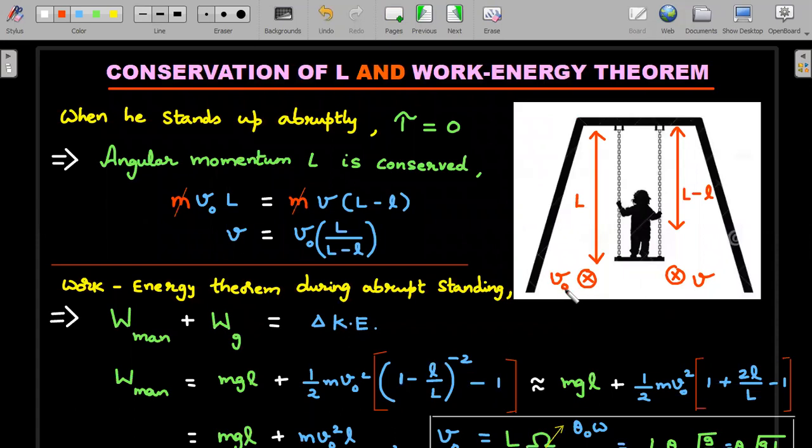You can substitute the value of v in terms of v naught and remove that v naught square out as a common term. Then you end up getting this kind of an expression. I have rearranged this to write a negative power, and since small l is very small compared to capital L as given in the question, I'll try to use the binomial expansion approximation.